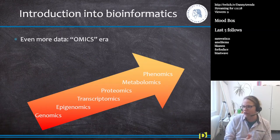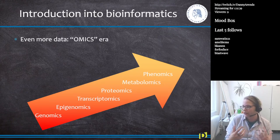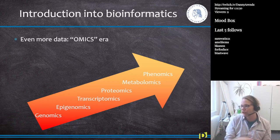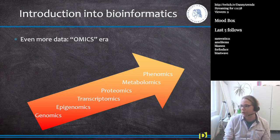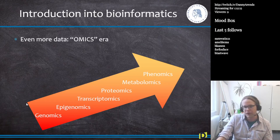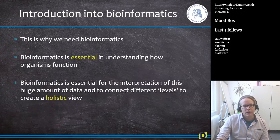We are now in what's called the omics era: genomics (DNA sequence), epigenomics (modifications on DNA), transcriptomics (messenger RNA and gene expression), proteomics (proteins), metabolomics (metabolites), and phenomics (automated measurement of many phenotypes). These are the levels a bioinformatician deals with. It's an interdisciplinary field — you need to understand computers, biology across all these fields, and statistics.